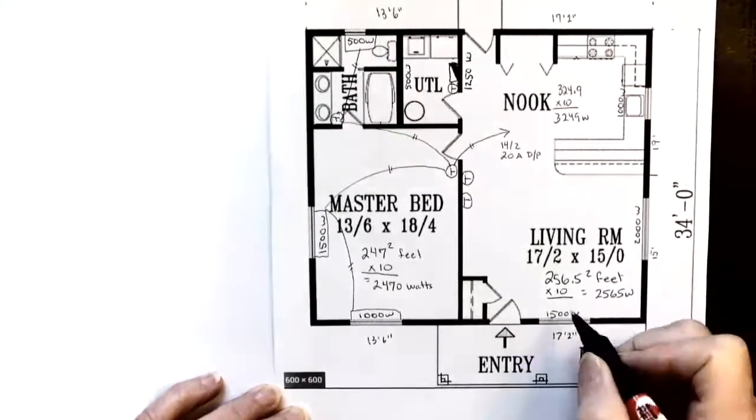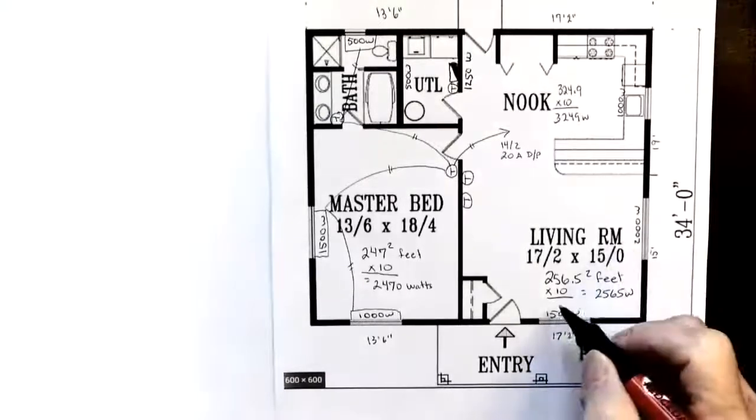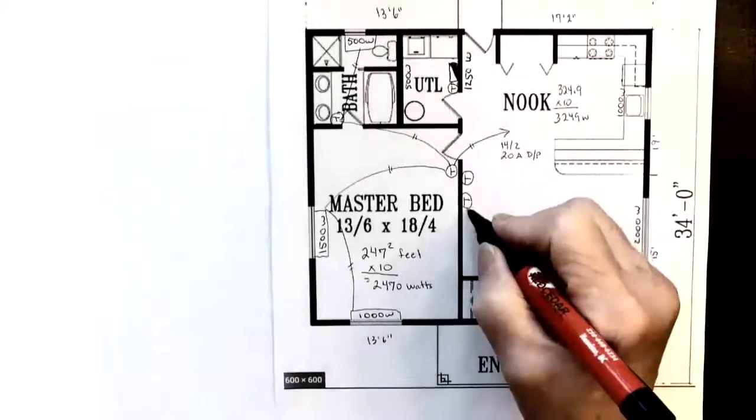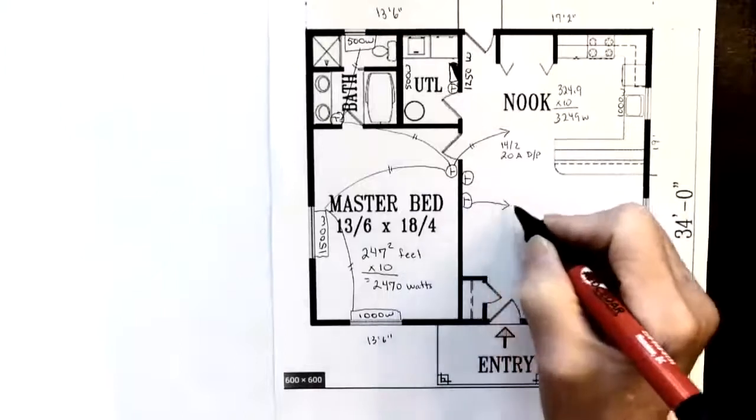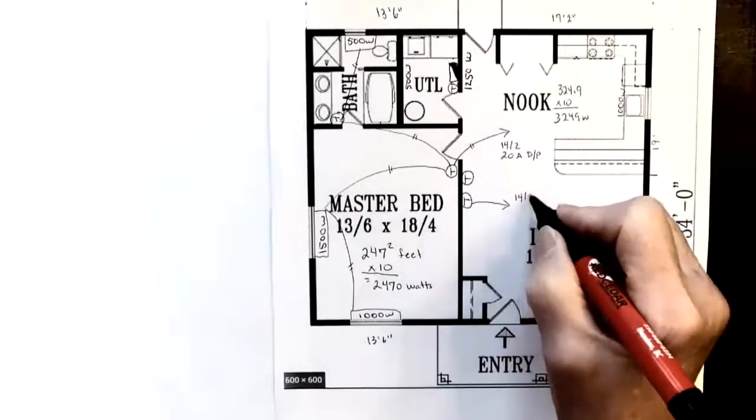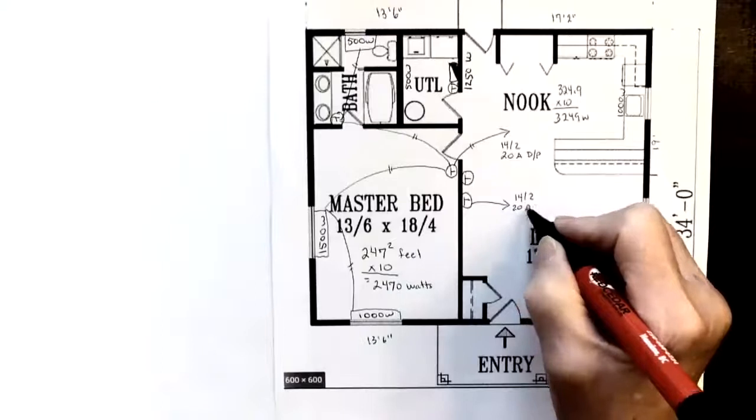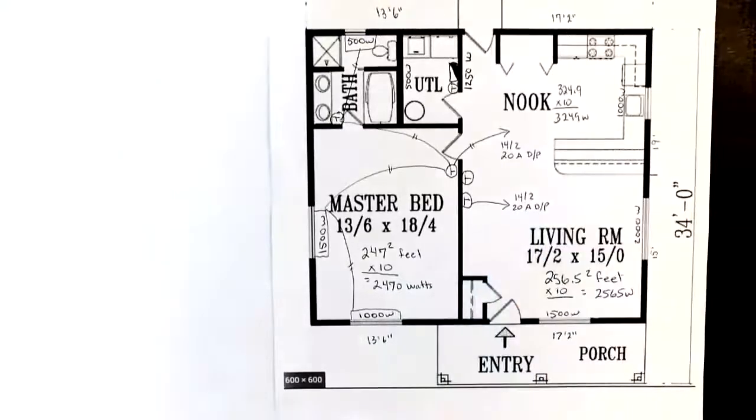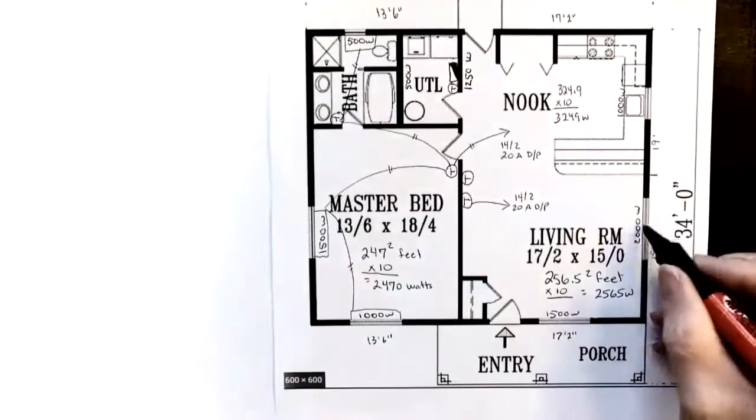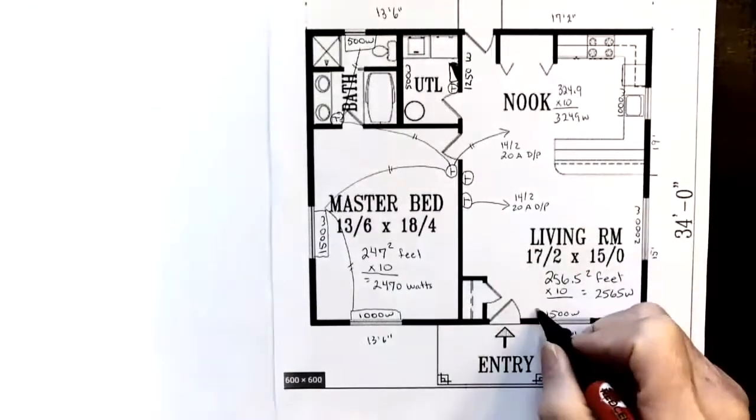Now we also calculated that we're going to put the living room on a separate circuit, so we're going to take a home run. This is also going to be a 14-2 and 20 amp double pole. And in this case, just for the fun of it, I'm going to take two runs out to these baseboard heaters.